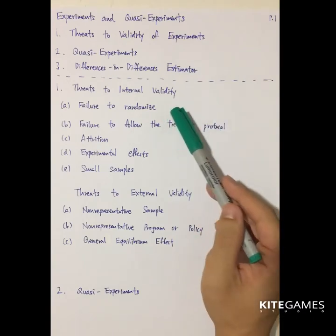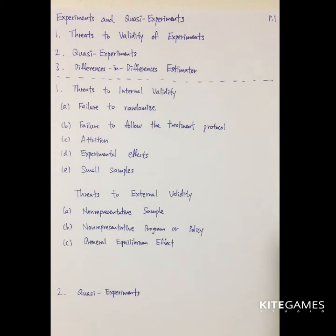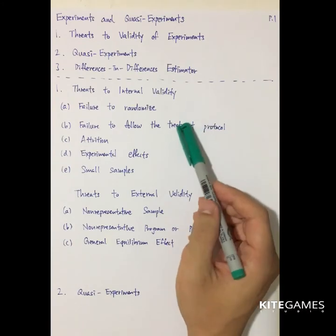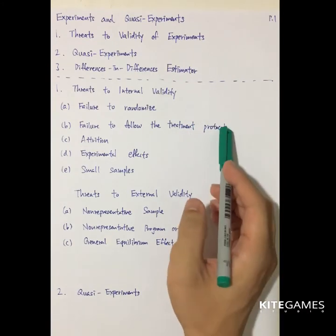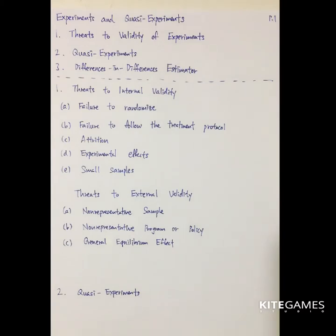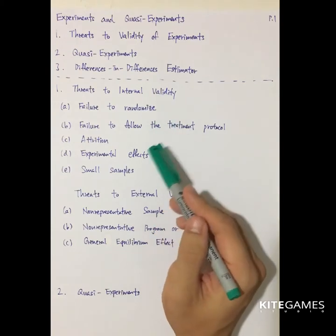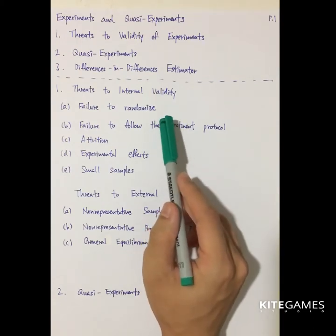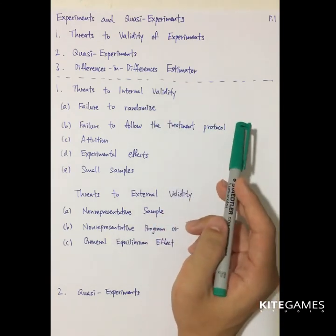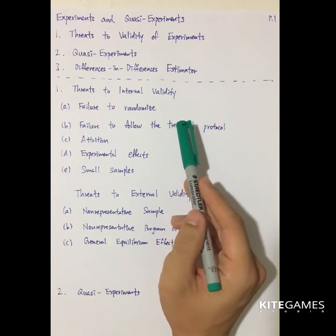The first one is failure to randomize. In order to get representative samples, you need to randomize the experiment subjects. If you fail to randomize the samples, you may encounter what is called a sample selection bias problem. For example, if you want to find the effect of education on salary and you only draw people from high-income groups, you may fail to explain whether education can increase your wage.